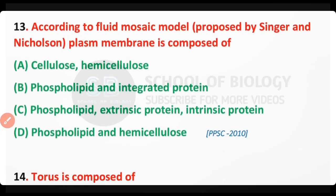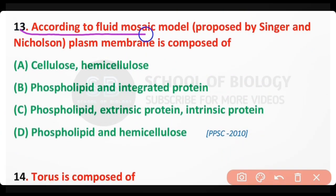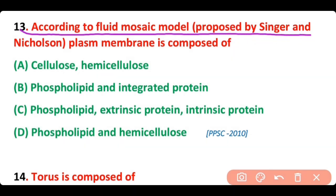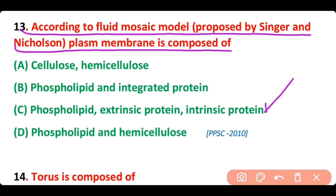Question number thirteen: According to the fluid mosaic model proposed by Singer and Nicholson, plasma membrane is composed of — cellulose and hemicellulose, phospholipid and integrated protein, phospholipid with extrinsic and intrinsic protein, or phospholipid and hemicellulose? The correct answer is option C. According to the fluid mosaic model, plasma membrane is composed of phospholipid, extrinsic protein, as well as intrinsic protein.